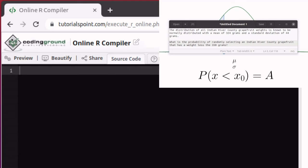So here's a sample problem. The distribution of all Indian River County grapefruit weights is known to be normally distributed with a mean of 324 grams and a standard deviation of 34 grams. What's the probability of randomly selecting an Indian River grapefruit that has a weight less than 350 grams?